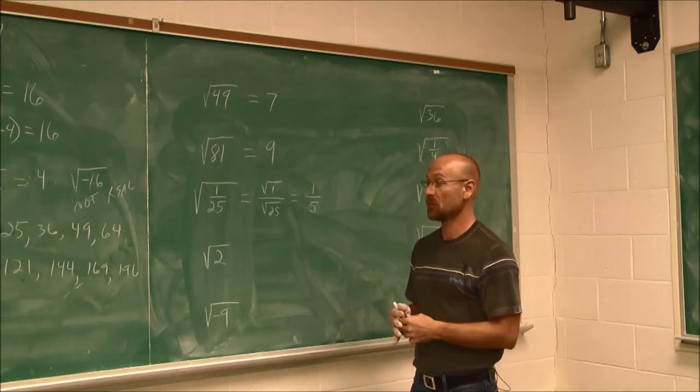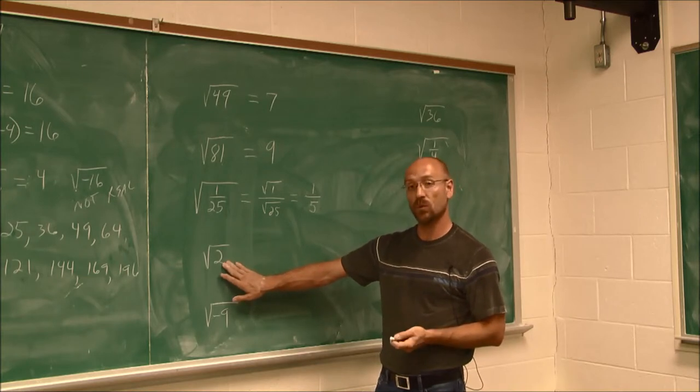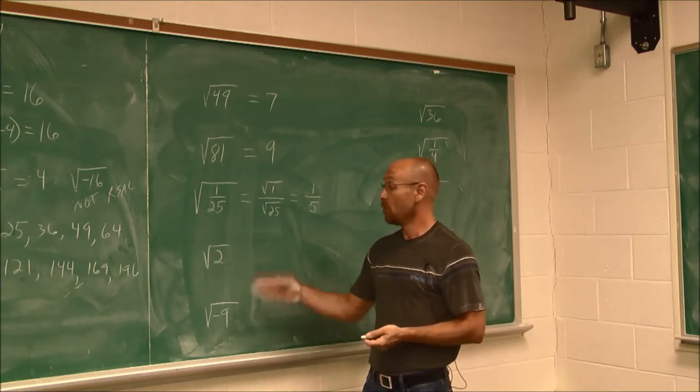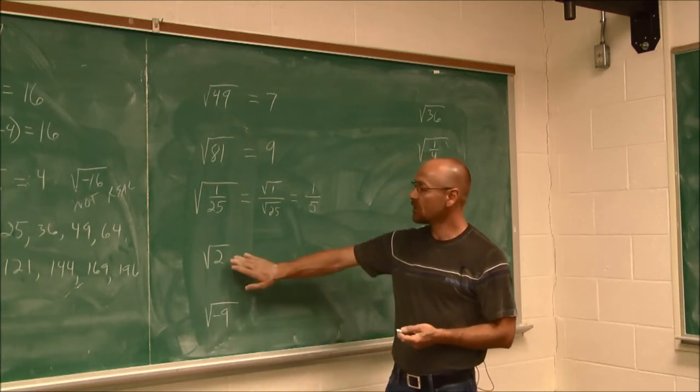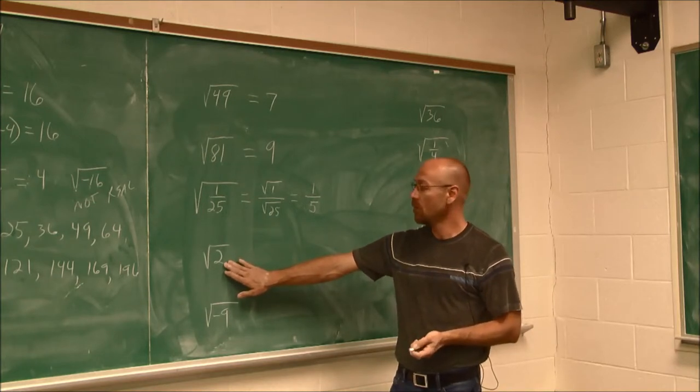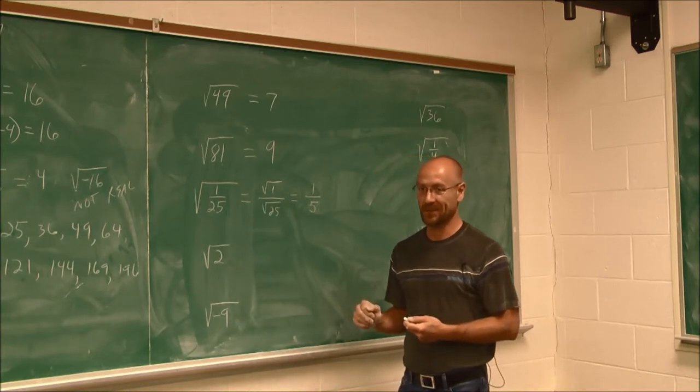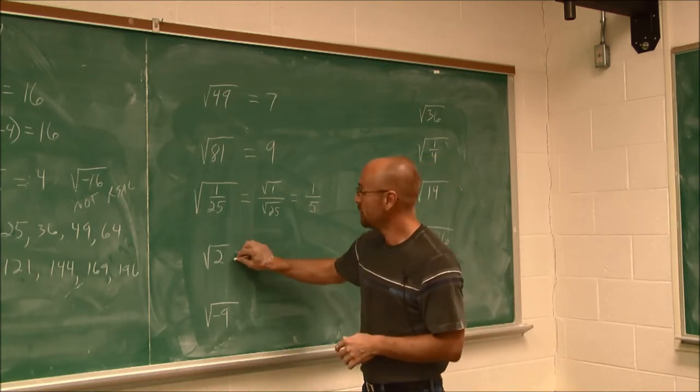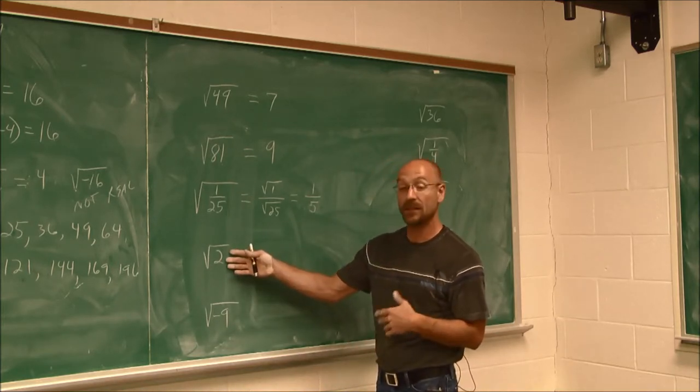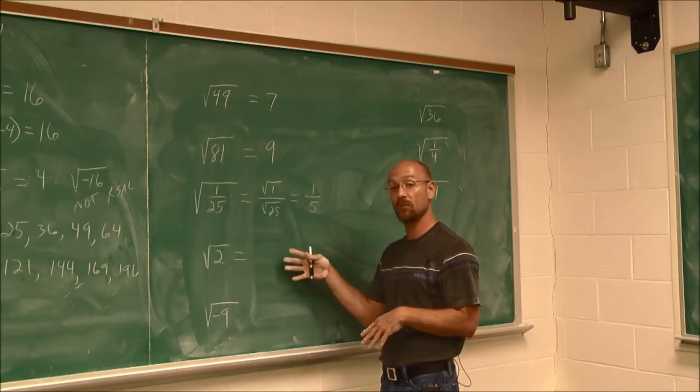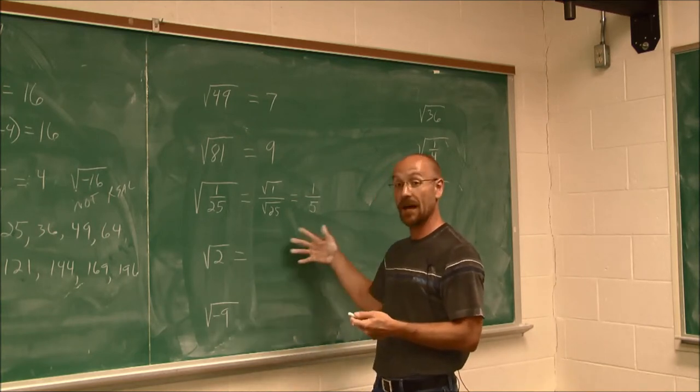Now, not every number is a perfect square, as we've seen in the list on the previous screen. Is 2 a perfect square? It is not. 1 is a perfect square. 4 is a perfect square. The numbers in between there are not perfect squares. So how do we find this value? Well, for this level of math, this is where we are committed to using a calculator for this level of math. If you plug this into a calculator, it's going to give you a decimal number. And this is what we call an irrational number. It's a non-repeating, non-terminating decimal. That decimal would go on forever if we could allow it.